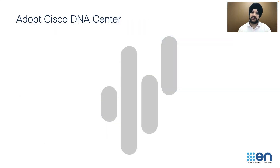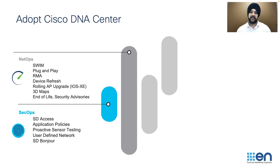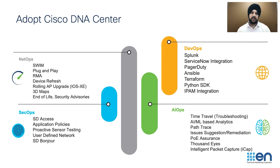Once you have completely migrated to Cisco DNA Center, you can take advantage of all the amazing features it brings. You can do SD-Access, SD-Bonjour, and many NetOps use cases like 3D maps. You can receive security advisories and end-of-life notifications for devices. You can also do AI Ops — including time travel to go back in time to see what issues clients and users were having — AI/ML, path trace, ThousandEyes integration, and packet capture. You can even do programmability with DevOps and integrate with Splunk, ServiceNow, Ansible, and many other tools.